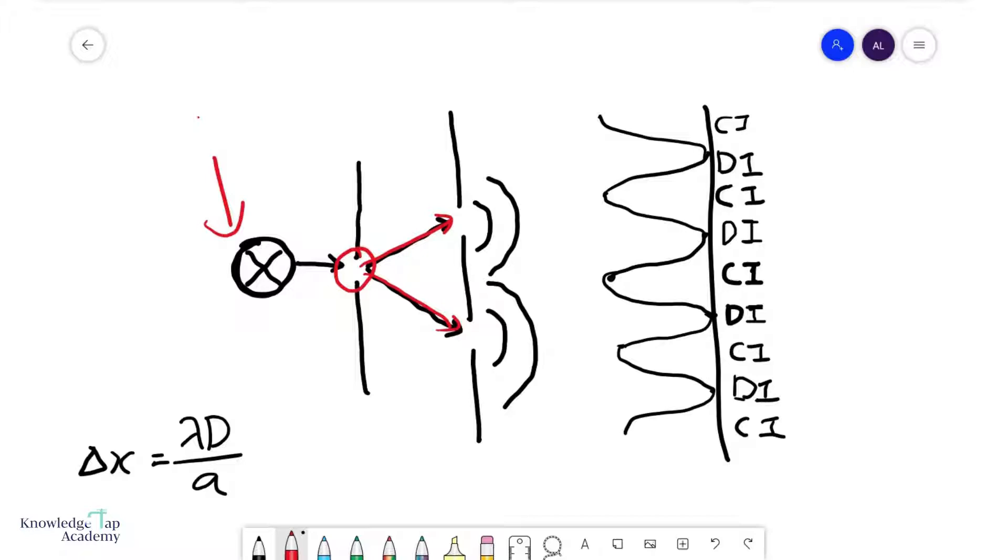So what's going to happen here right in the middle, notice that these two path lengths are exactly the same. And so what's going to happen, remember that if you have two path lengths that are exactly the same,